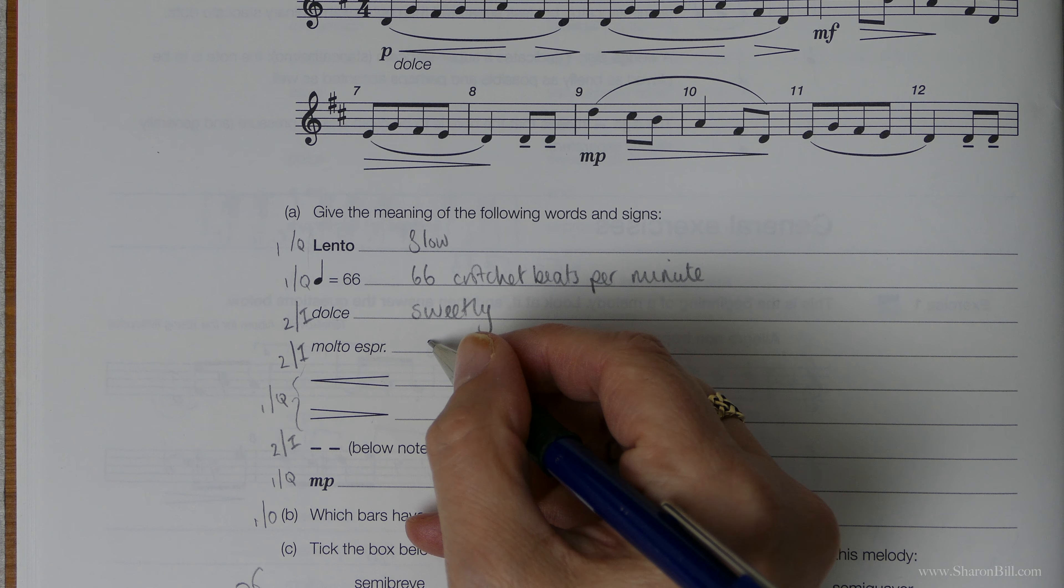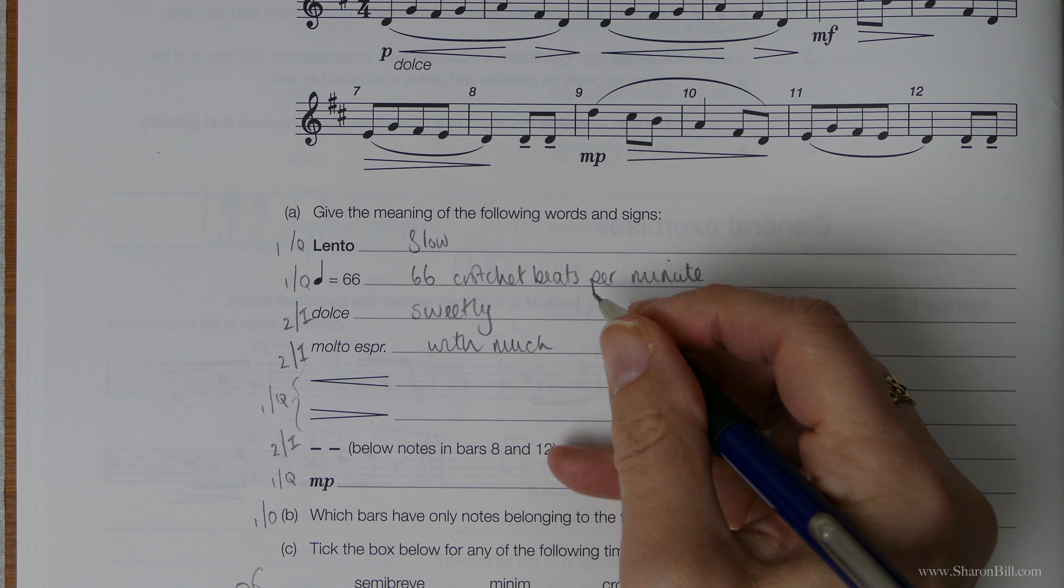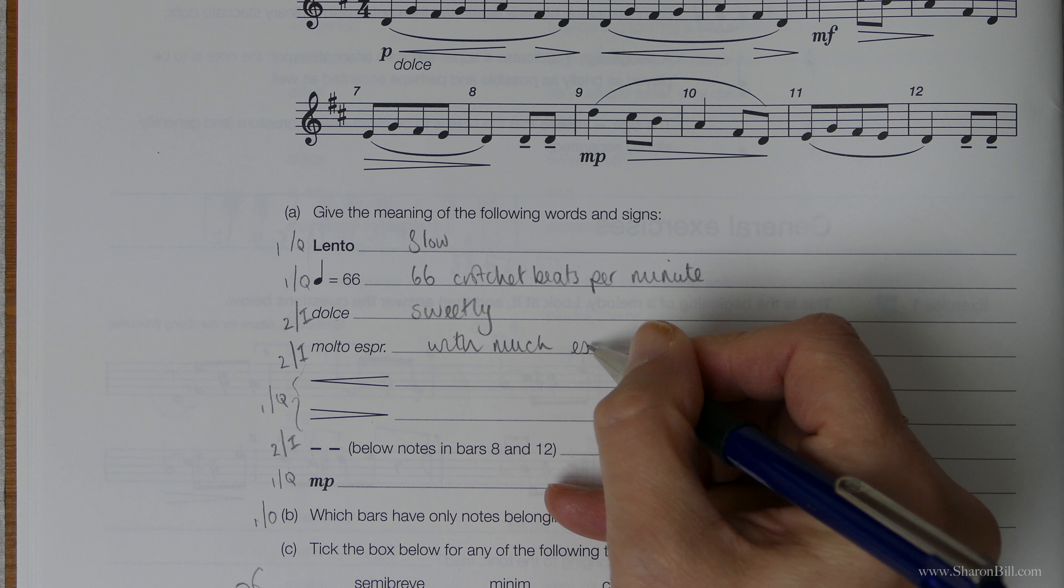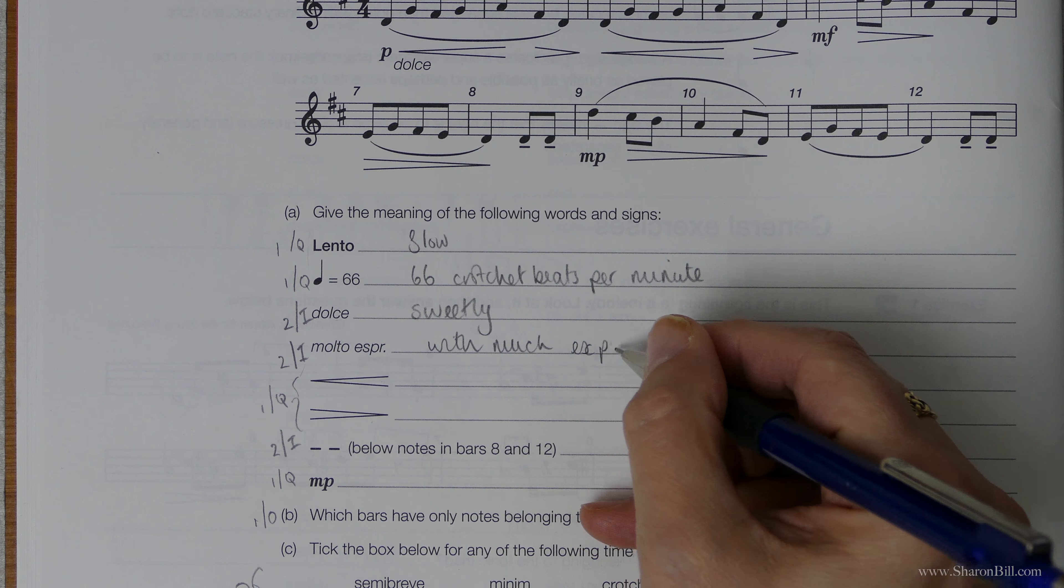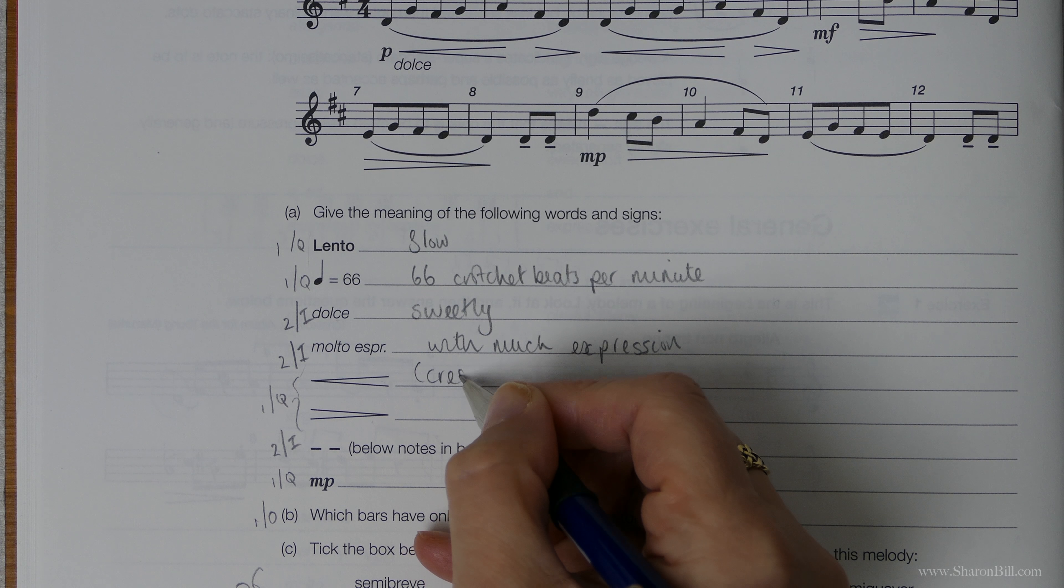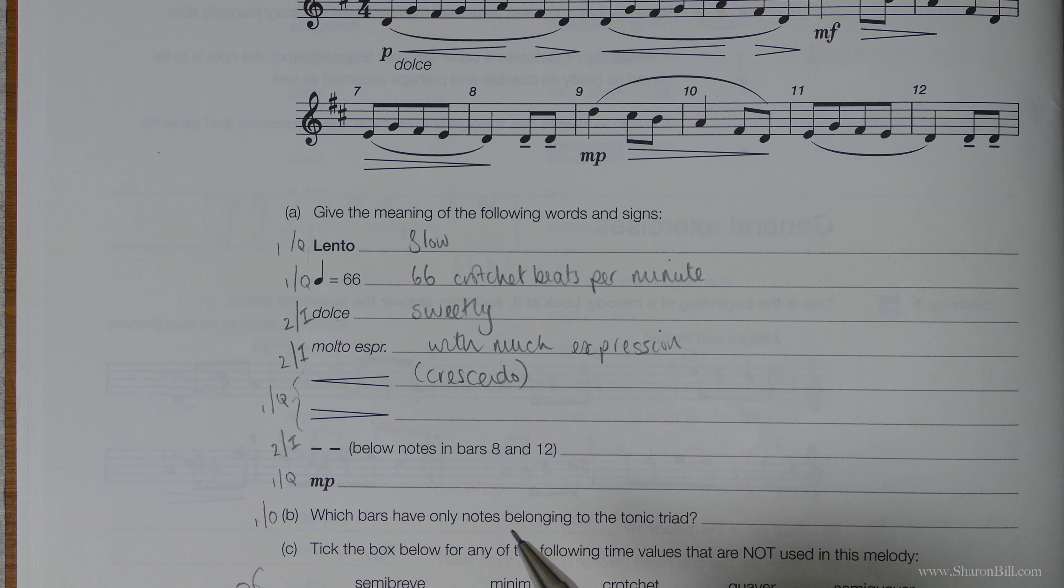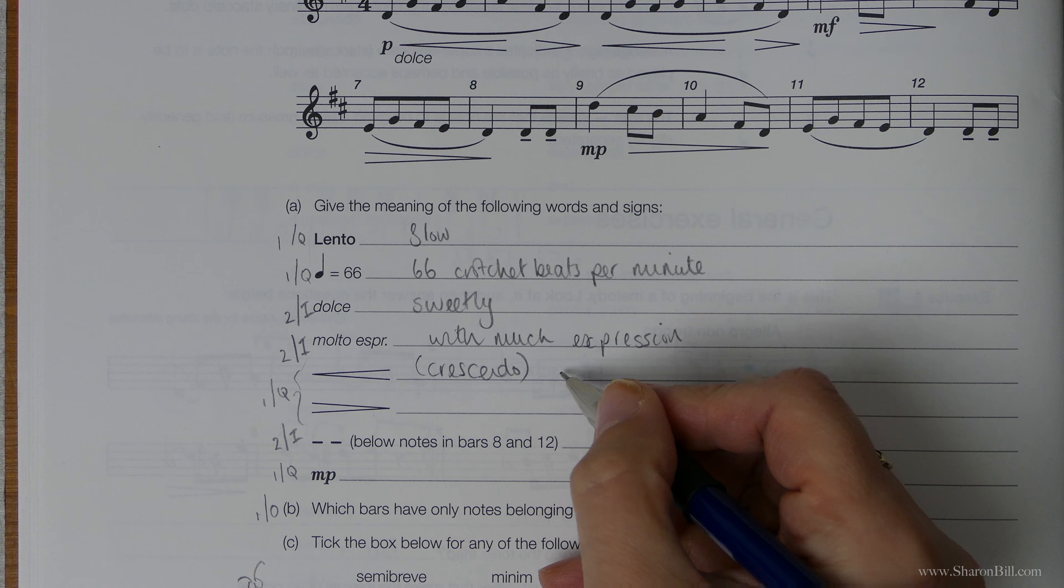So however you want to put your construction of the sentence together, so long as it's got much or greatly or something like that with much expression is perhaps the best take on that. This symbol here, it's the symbol for crescendo that came up in the last exercise and it means gradually getting louder.